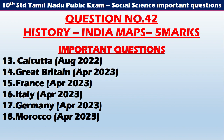All these are the regular questions asked in the History 5-mark map. Calcutta is August 2022. Great Britain: April 2023. France: April 2023. Italy: April 2023. Germany: April 2023. Morocco: also 2023. All these are the regular History India map questions. Please make note of that and plan your studies accordingly. You will be able to get 100% 5 marks in maps — that is for History, question number 42.